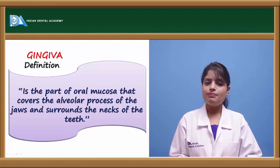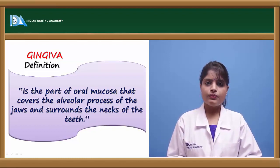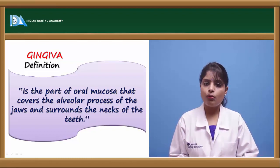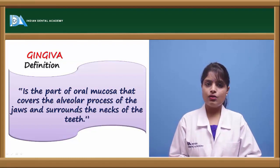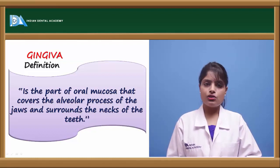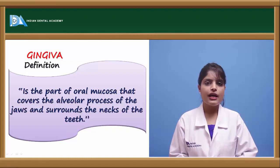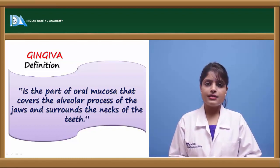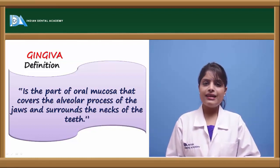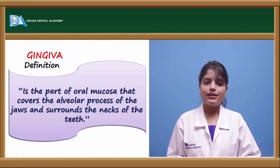Gingiva is one of the most important parts of the periodontium. The periodontium further supports the teeth. Gingiva plays an important role in the supportive and nutritive function of the teeth. It also helps in proprioception — that is, perceiving impulses from the exterior and taking them to the interior or vital organs.